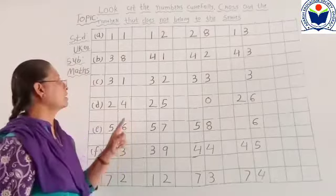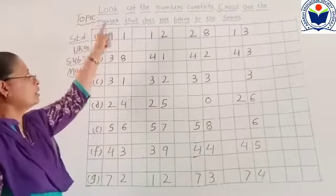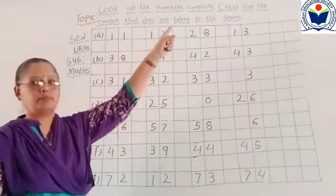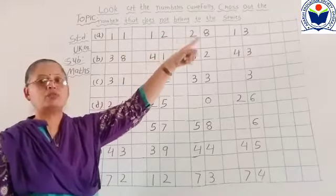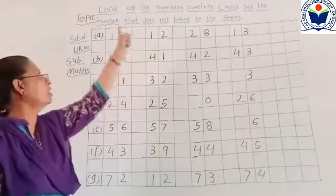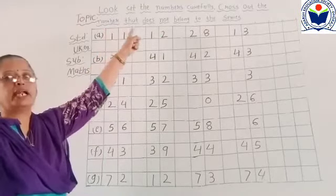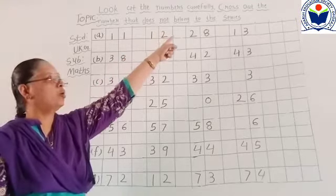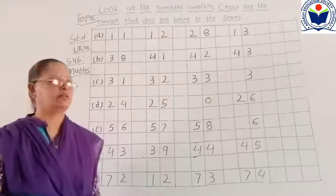To phir se — look at the numbers carefully. Cross out the number that does not belong to the series.